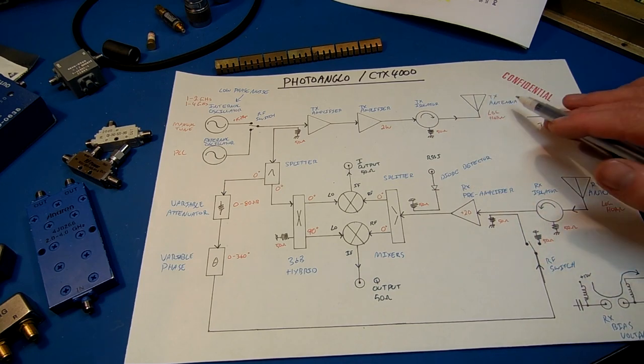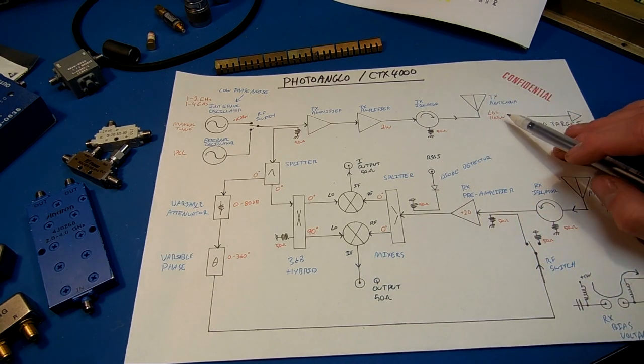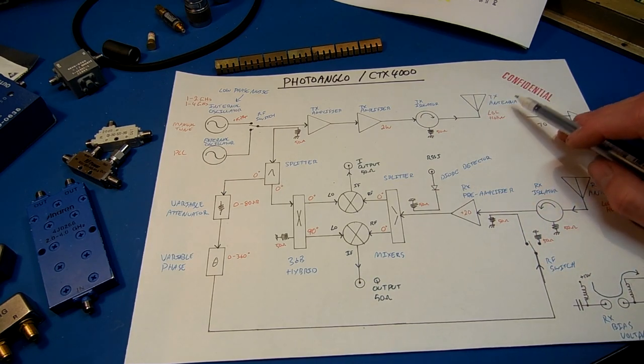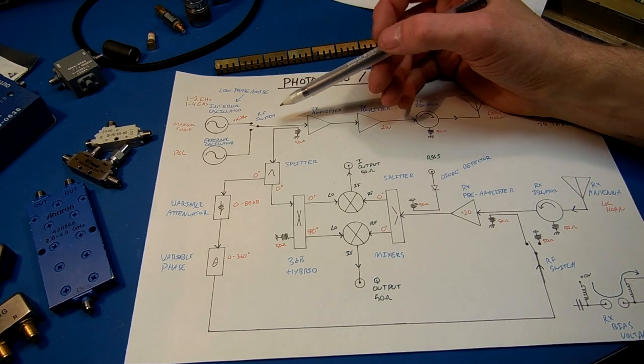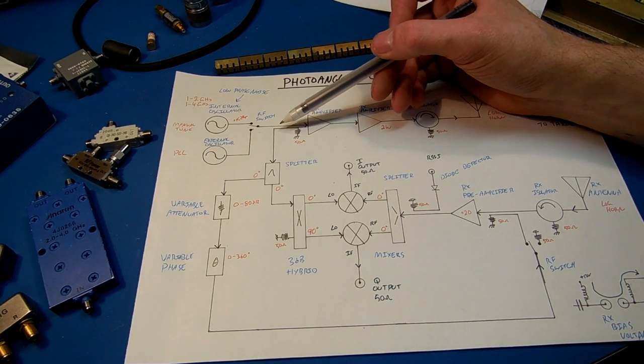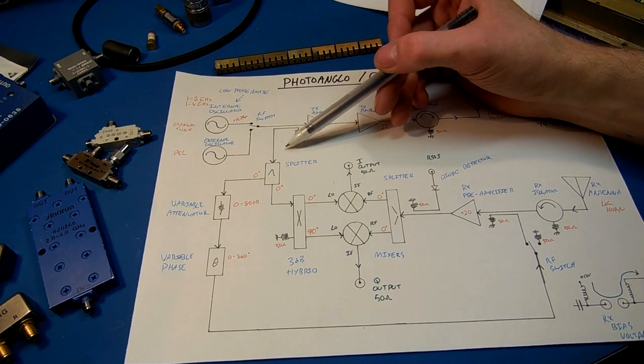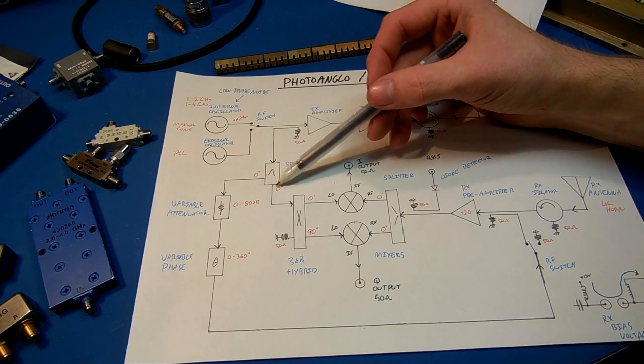The output of the isolator is connected to the transmit antenna, which is most likely a log-periodic or horn-type antenna. On the sample of our transmit oscillator, it gets split into two. This is what a splitter looks like.